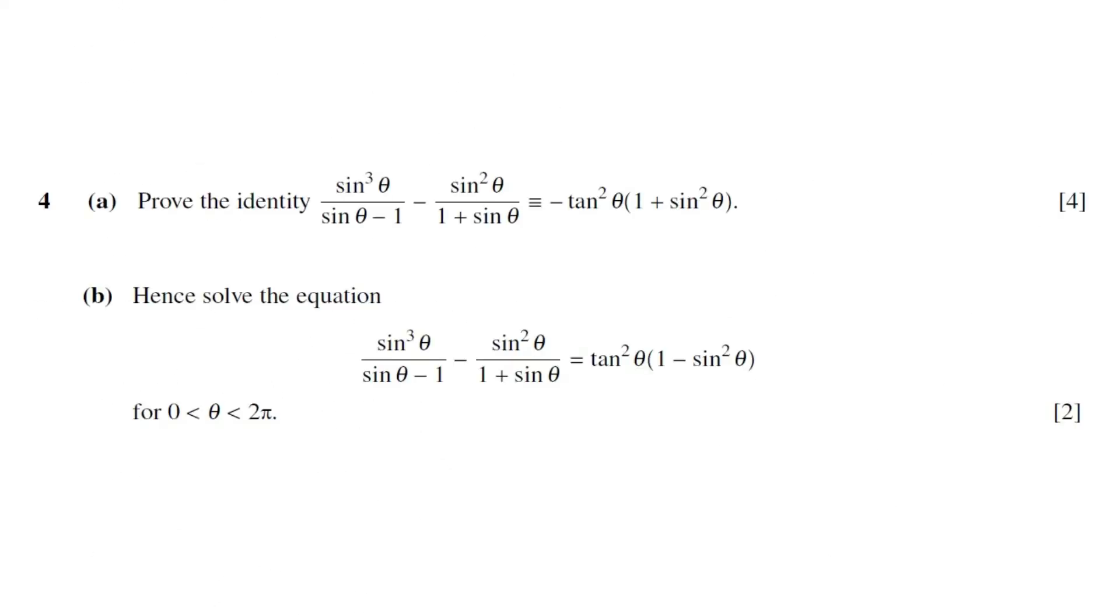Question number 4, part A. Prove the identity sin³θ/(sinθ - 1) - sin²θ/(1 + sinθ) = -tan²θ(1 + sin²θ). This question got 4 marks. Here we need to prove this identity.